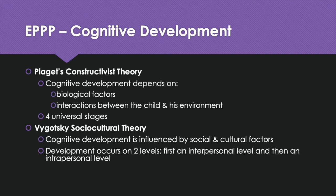According to Piaget, cognitive development depends on biological factors and interactions between the child and his environment. There are four universal stages that every child progresses through, although not everyone reaches the last stage. The child plays an active role in his own cognitive development by interacting with the environment — that's what makes it a constructivist theory.